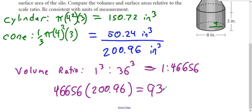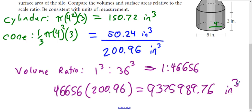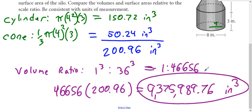Multiplying 46,656 times 200.96 gives a gigantic number — over 9 million cubic inches. That's not a practical unit; they would use yards or cubic feet. In fact, it would be closer to about 200.96 cubic yards. But since the problem says to be consistent with units of measurement, we'll stick with cubic inches.